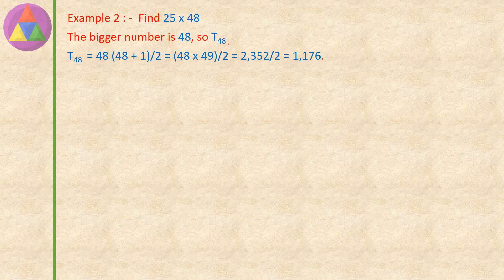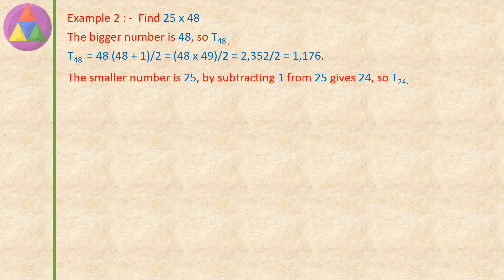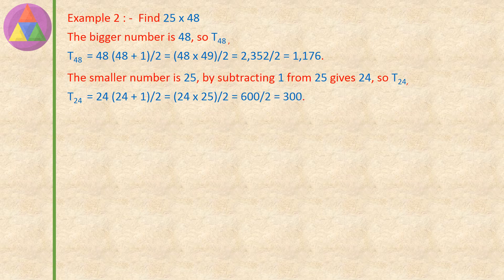The smaller number is 25; subtracting 1 from 25 gives 24, so we find T24. T24 equals 24 into (24 plus 1), divided by 2, equals 24 into 25, divided by 2, equals 600 divided by 2, equals 300. So the value of T24 is 300. Adding T48 and T24: 1176 plus 300 equals 1476.